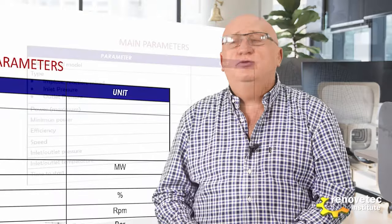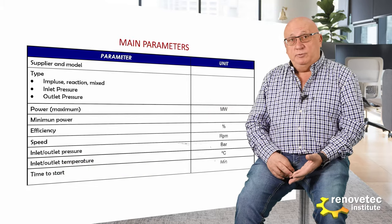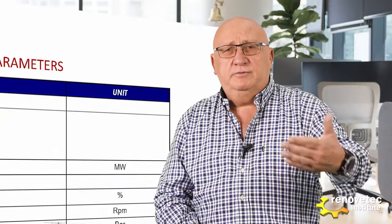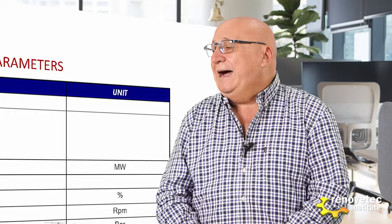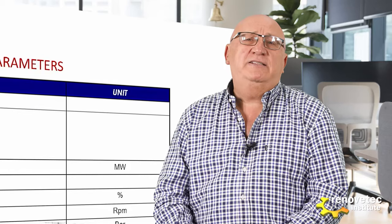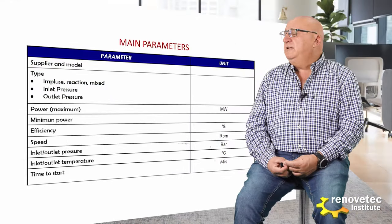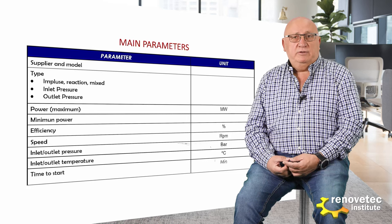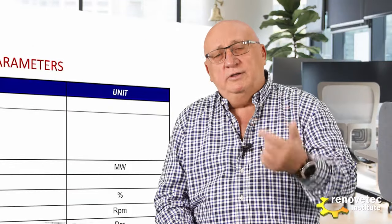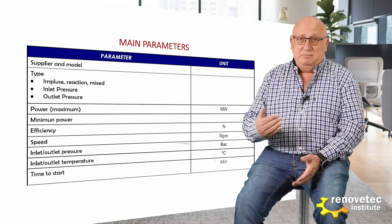The main parameters of a steam turbine include: the supplier model, the type of turbine — impulse, reaction, or mixed — the inlet pressure classification (high, medium, or low pressure), and the outlet pressure (condensing or back pressure). One very important characteristic is the power, and also the minimum power or technical minimum power, which is the minimum power needed to maintain the turbine rotating. Normally in a steam turbine this is around 10% of the maximum power.